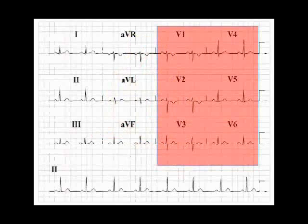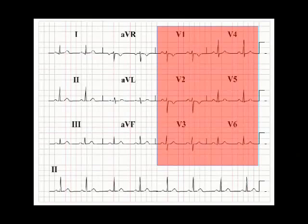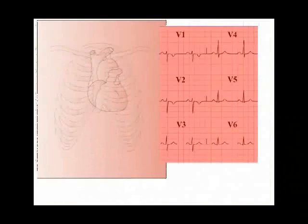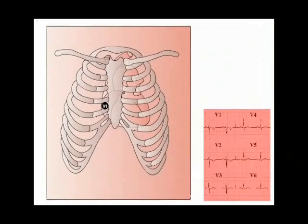These six leads, V1 to V6, are placed on the surface of the chest wall in an arc, from V1 in the fourth right intercostal space to the right of the sternum, to lead V2 in the fourth left intercostal space to the left of the sternum, and then at roughly equal intervals to lead V6 in the fifth left intercostal space in the mid-axillary line.